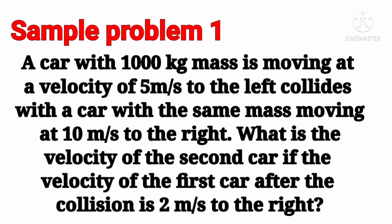Let us now have sample problem 1. A car with 1,000 kg mass is moving at a velocity of 5 m/s to the left, and collides with a car with the same mass moving at 10 m/s to the right. What is the velocity of the second car if the velocity of the first car after collision is 2 m/s to the right?